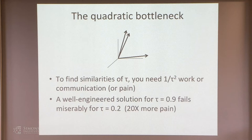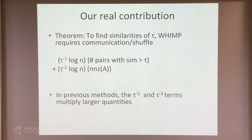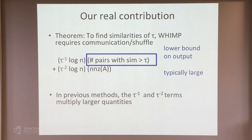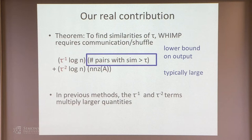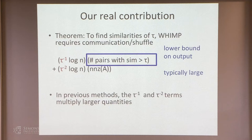The real theoretical contribution is an algorithm which finds similarities of tau where the total communication is: the number of pairs whose similarity is greater than tau (the output size) multiplied by tau^{-1}, plus the number of non-zeros in the matrix multiplied by tau^{-2}. There is a tau^{-2} pain, but it multiplies a smaller quantity. In previous algorithms, the tau^{-1} and tau^{-2} terms multiplied larger quantities. The hard part was getting tau^{-1} to multiply the larger quantity in the communication.